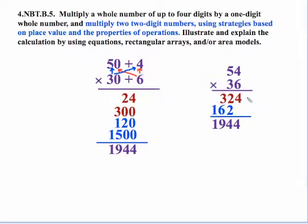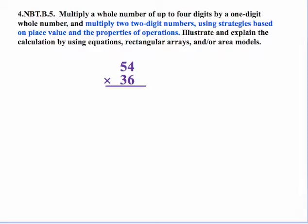Now, if we compare what we just did to the standard algorithm, notice there's our 24 and our 300. There's the 324. And here's where you really can see what happened. The 120 plus the 1,500, that's 1,620. So what happens here when we shift it to the left, obviously, is that this is really a zero.